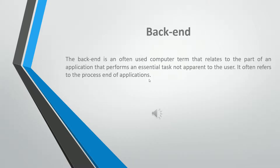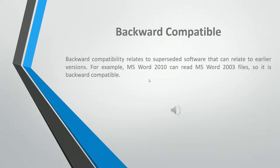The backend is an often-used computer term that relates to the part of an application that performs an essential task not apparent to the user. It often refers to the process end of applications. Backward compatibility relates to superseded software that can relate to earlier versions. For example, MS Word 2010 can read MS Word 2003 files, so it is backward compatible.